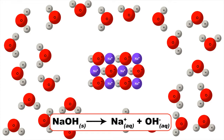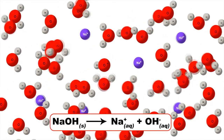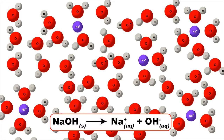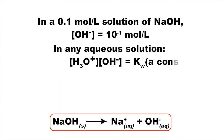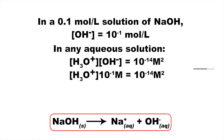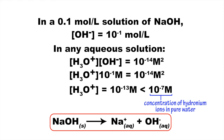Sodium hydroxide is an ionic solid that dissociates completely in water to form sodium ions and hydroxide ions. The concentration of hydroxide ions is therefore 10 to the power of minus 1 moles per litre. The concentration of hydronium ions can be calculated by utilizing the fact that in any aqueous solution, the product of the concentration of hydronium ions multiplied by the concentration of hydroxide ions is a constant, equal to 10 to the power of minus 14. So the concentration of hydronium ions works out to be 10 to the power of minus 13, which is much lower than the concentration of hydronium ions in pure water.